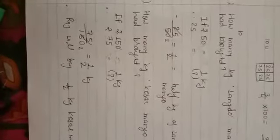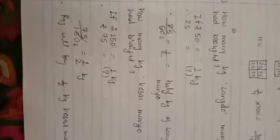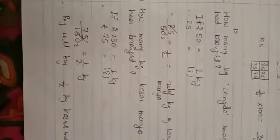In the second question, how many kg Kesar mango did he buy? If rupees 150 equals 1 kg, Kesar mango's price is rupees 150. If rupees 150 equals 1 kg, therefore rupees 75 divided by 2. How many? We do here cross multiplication.